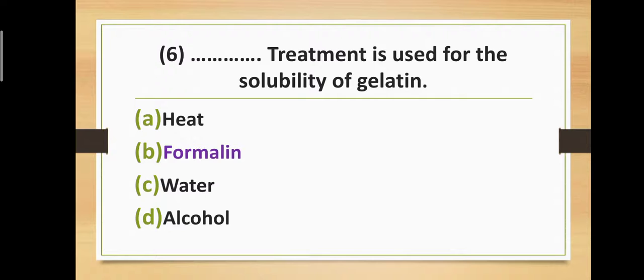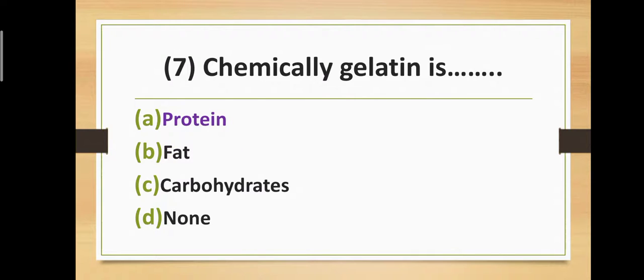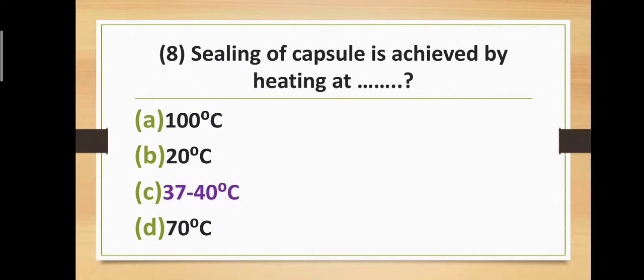Question number seven: Chemically, gelatin is — Option A: protein. Option B: fat. Option C: carbohydrates. Option D: none. The correct answer is option A — protein. Chemically, gelatin is a protein.